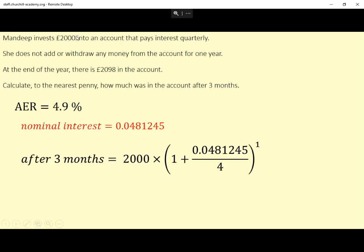Hopefully it's obviously times by 2,000, because that's the amount invested. The one up here is possibly one of the more difficult parts.